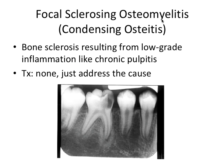Next is focal sclerosing osteomyelitis, much more commonly referred to as condensing osteitis. This one came up a ton on the exam, so know it cold. It's basically the bone's response to a longstanding, low-grade chronic infection like chronic pulpitis. The body forms a wall of diffuse, dense bone — a natural inflammatory response to wall off the infection. There is no treatment besides addressing the cause; the tooth would need a root canal at minimum. Whether the bone sclerosis resolves may vary, but once the infection is cleared, no further intervention is needed.